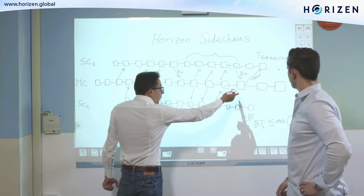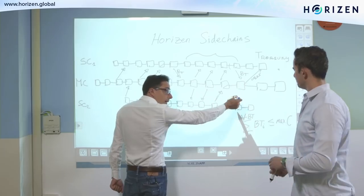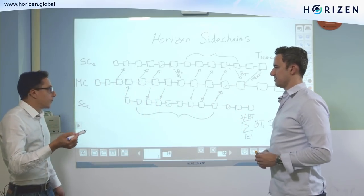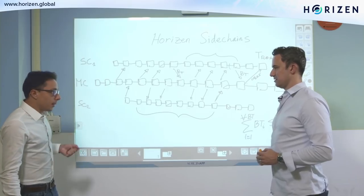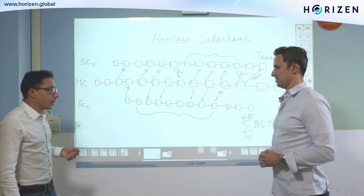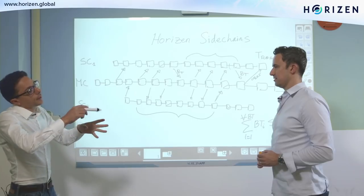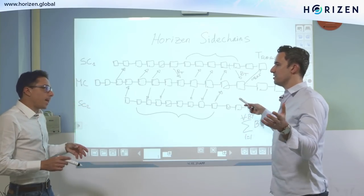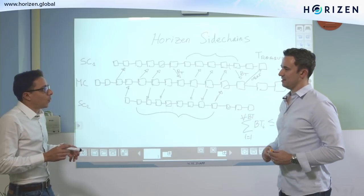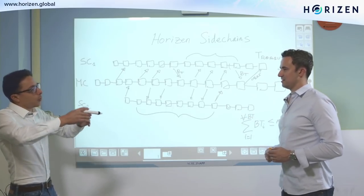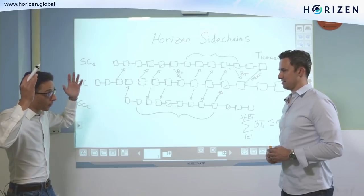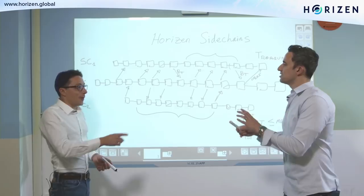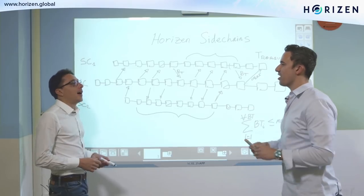A certifier that joins a certificate will not be able to unlock their coins for a certain number of payment epochs — essentially a fraud detection window. What happens in this fraud detection window? Even if you had the possibility of controlling 51% of the certifiers eligible to sign the certificate in a specific epoch, you still would not be able to unlock your coins immediately.